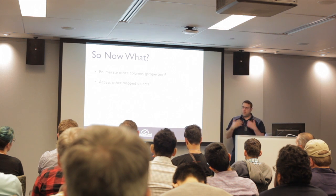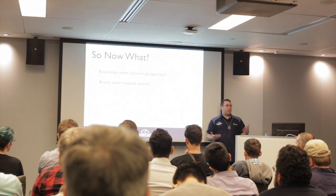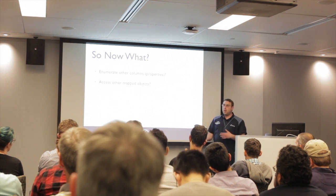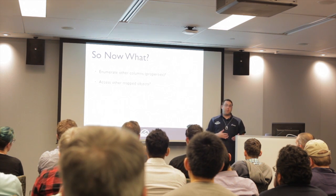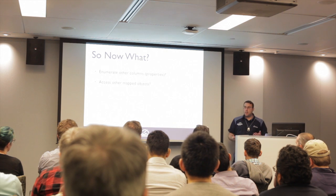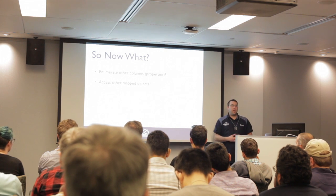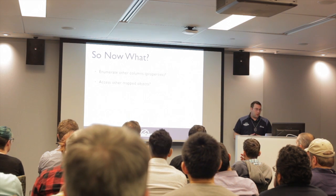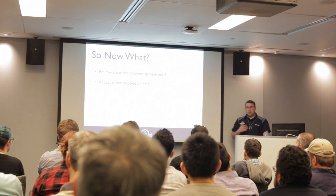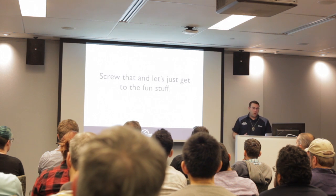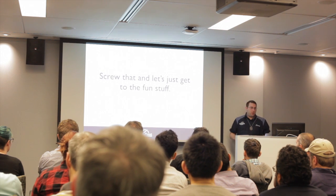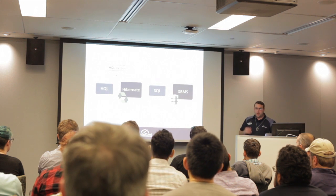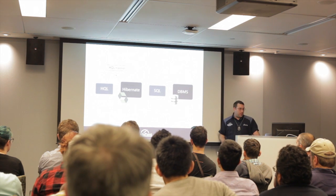At this point we have an HQL injection. But because of the limitations of HQL, there's only so much we can do. We could potentially enumerate columns or properties on the mapped objects, but without exceptions that can be very difficult. Also, we can only access mapped properties — so if we're trying to reach another table in the database that isn't mapped because it's not used by the application, we can't access it. No information_schema or metadata tables that way. But fortunately we don't need to worry about that, because any HQL injection can actually be escalated to a full SQL injection.